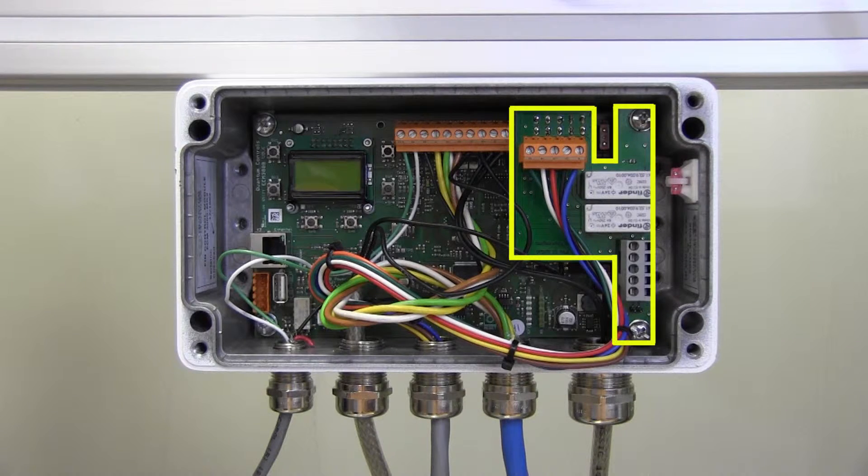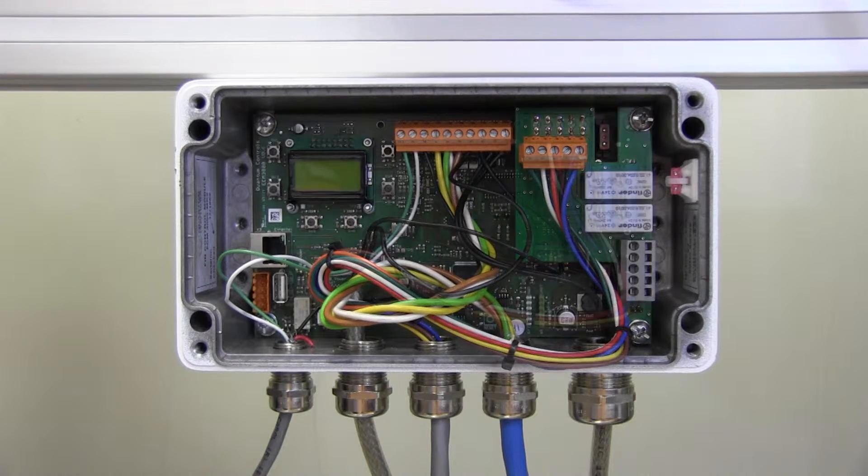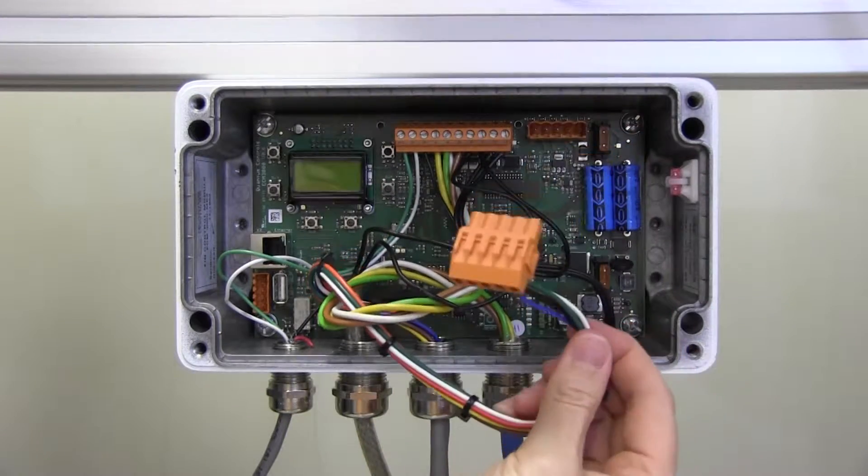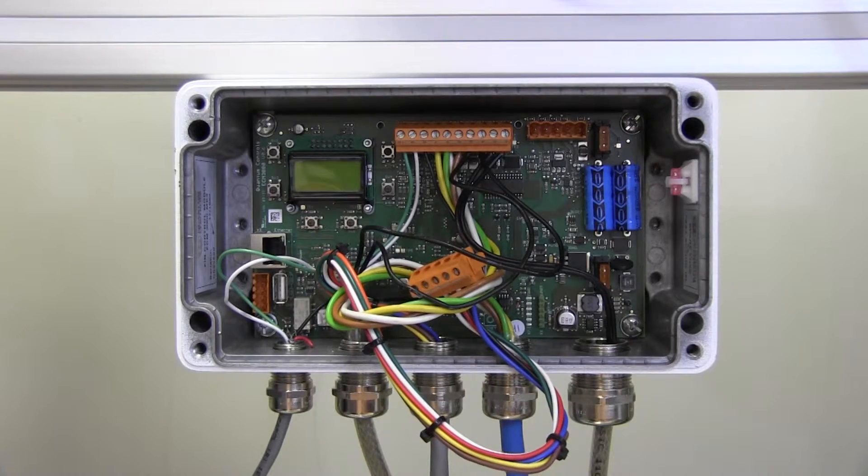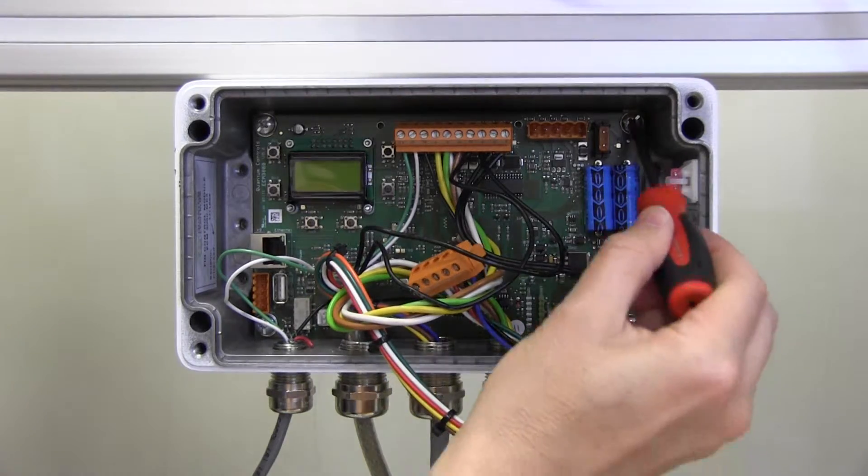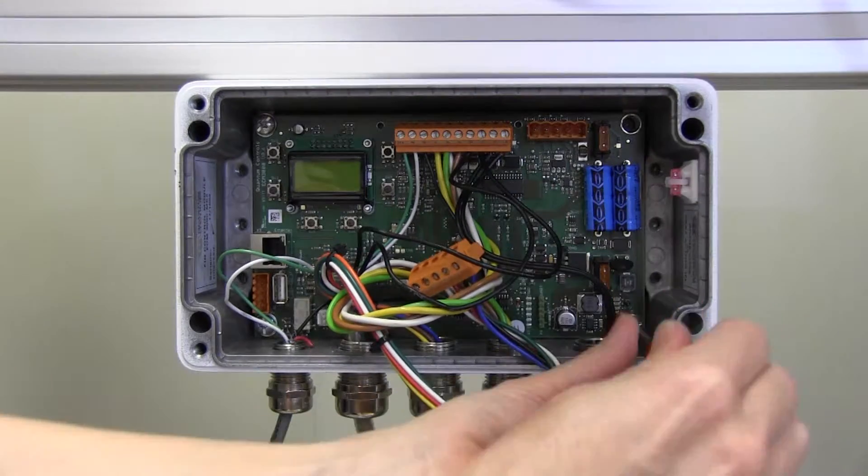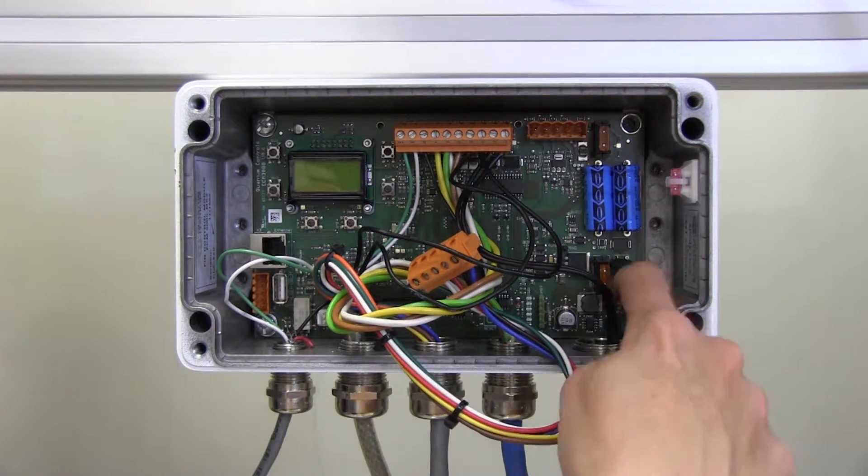Next, let's install the interface board inside the fin control module. Disconnect the 5-point orange connector from the J1 receiver on the fin control module circuit board. Using the Phillips head screwdriver, remove the two screws with captured lock nuts from the right side of the fin control module circuit board.